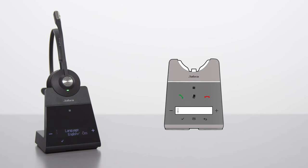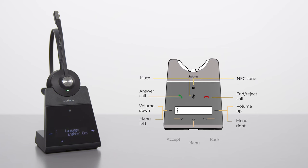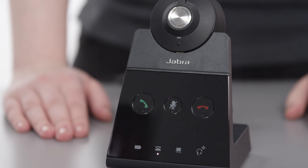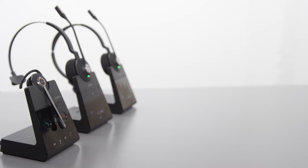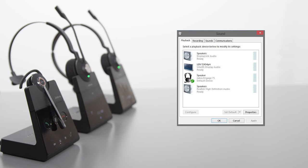Now you are ready to start the setup wizard for Jabra Engage 75. Follow the on-screen steps to complete the setup of the computer. For Jabra Engage 65, the initial setup of the computer is completed. When the setup is completed, ensure the Jabra Engage is set as the default playback and recording device in the Windows sound settings.